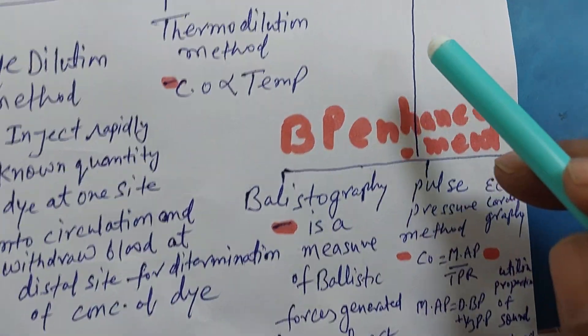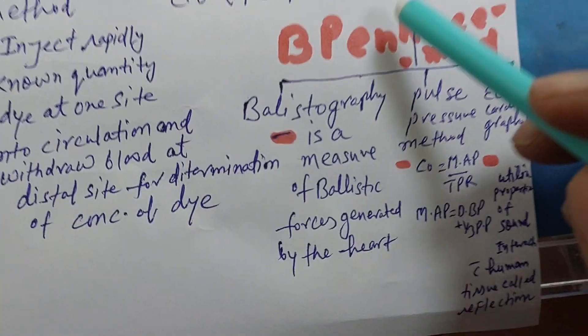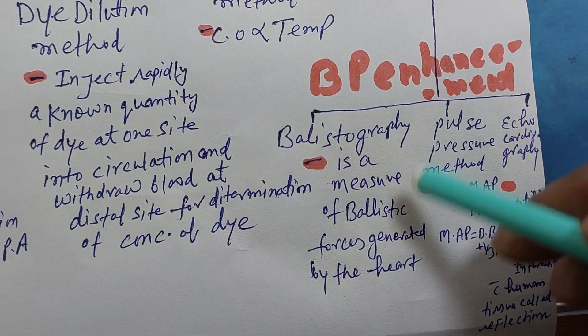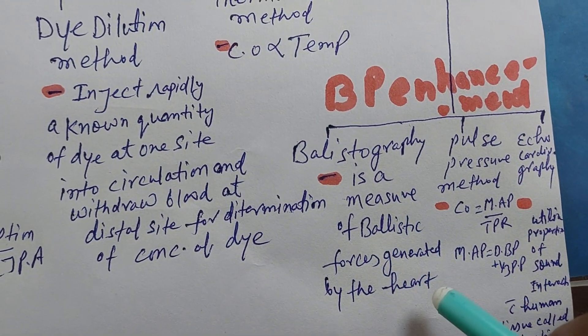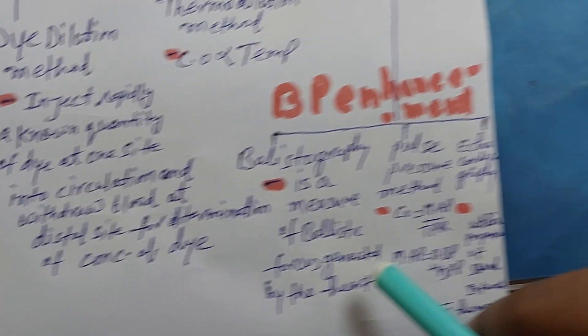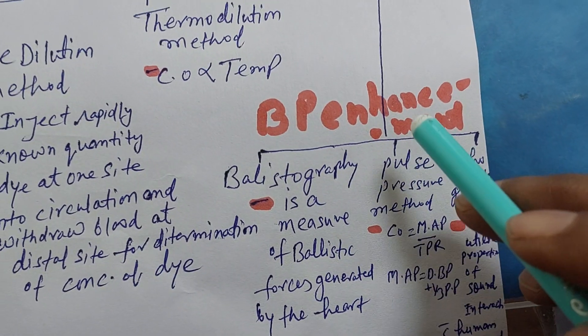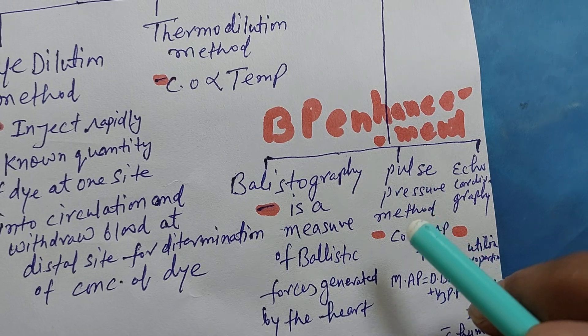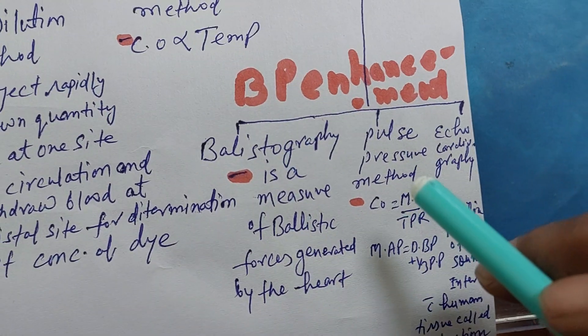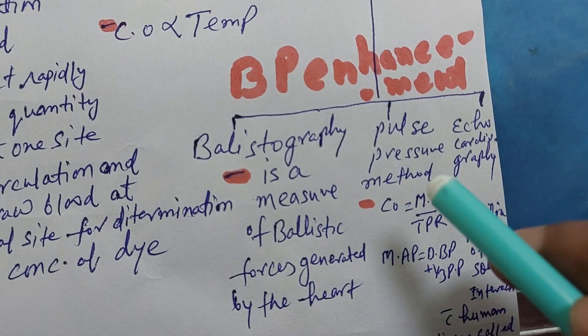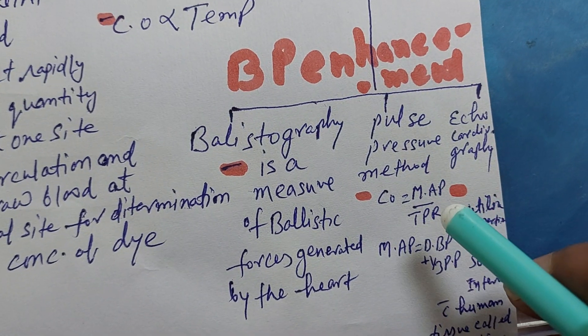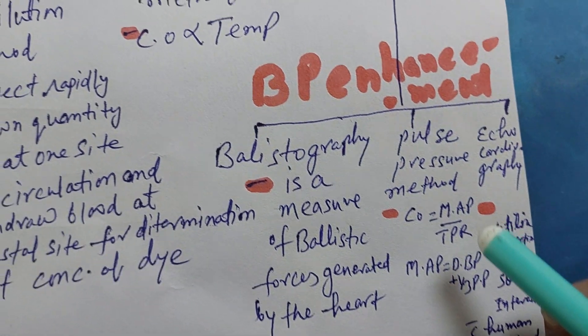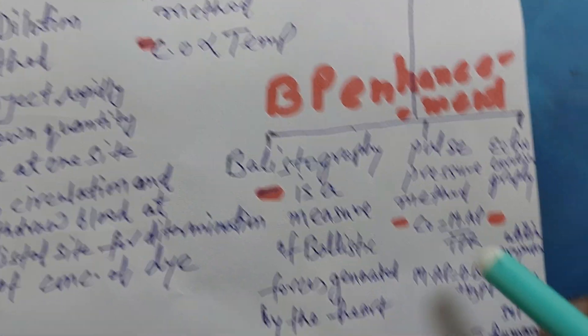In ballistography, the principle is the measurement of ballistic forces generated by the heart. In the pulse pressure method, the equation is: cardiac output equals mean arterial pressure divided by total peripheral resistance.